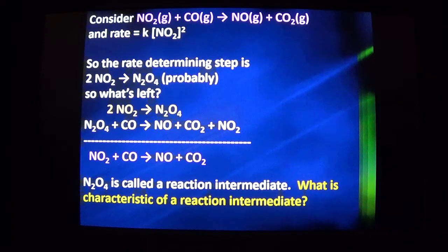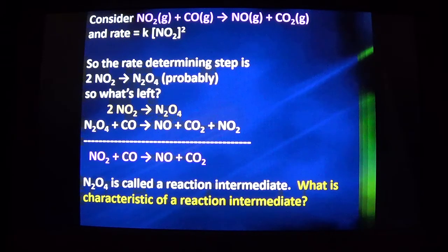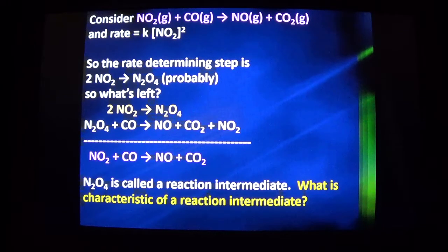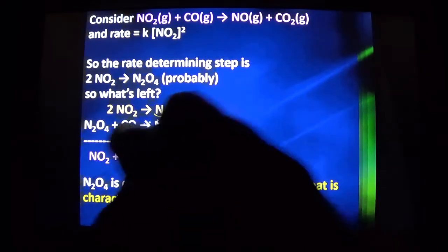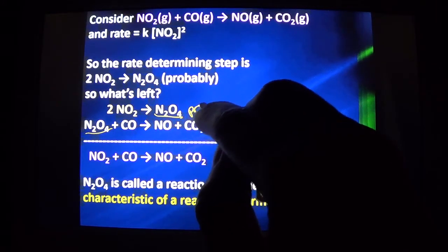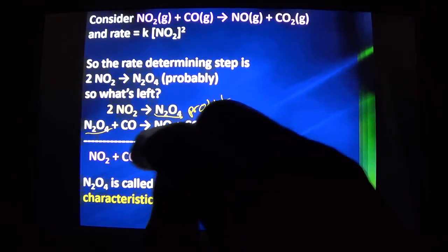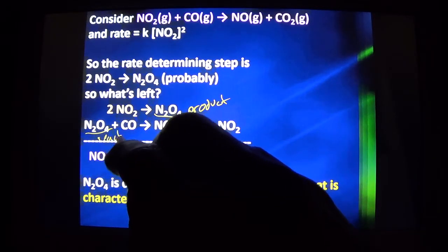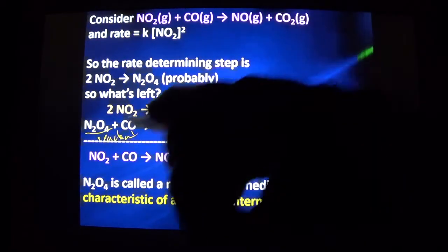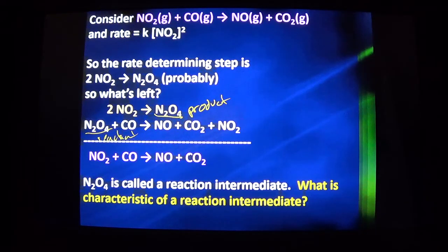Now N2O4 is an intermediate. What's characteristic of an intermediate? An intermediate of N2O4 is a product in an early reaction and is a reactant in a later reaction. It cancels so that you do not see it in the overall balanced equation. That is the characteristic of a reaction intermediate.